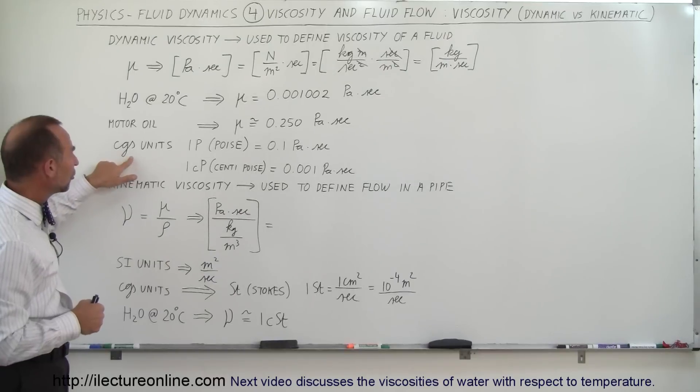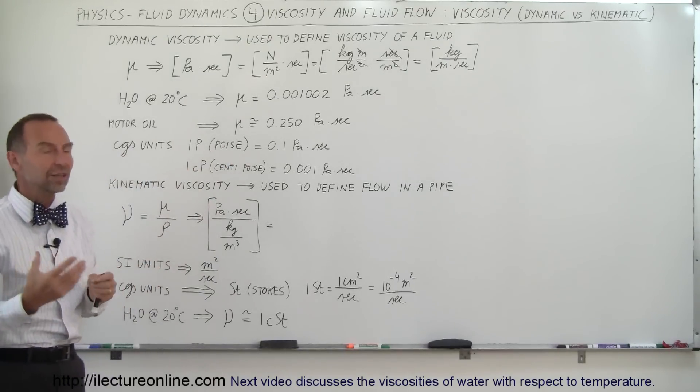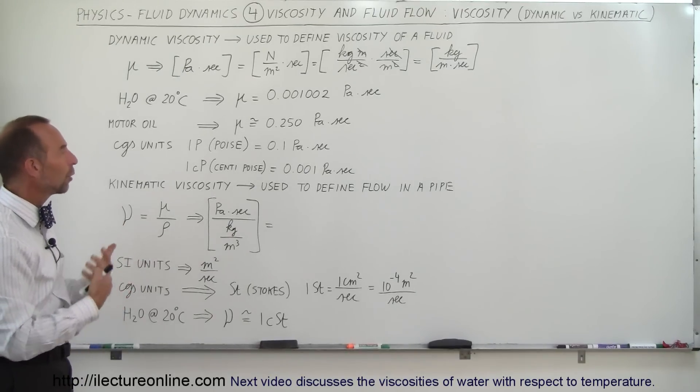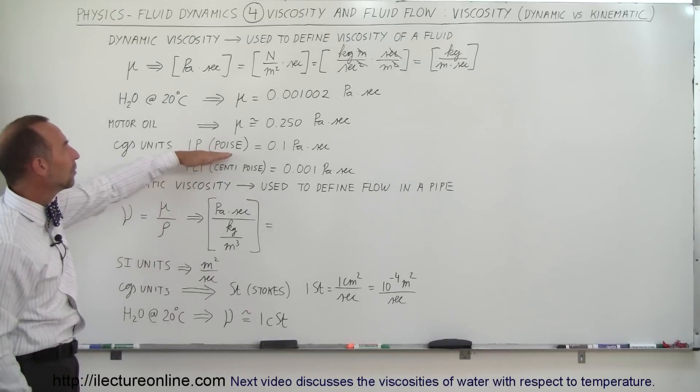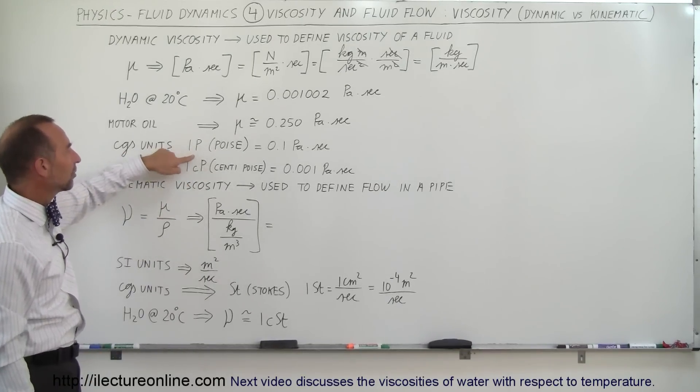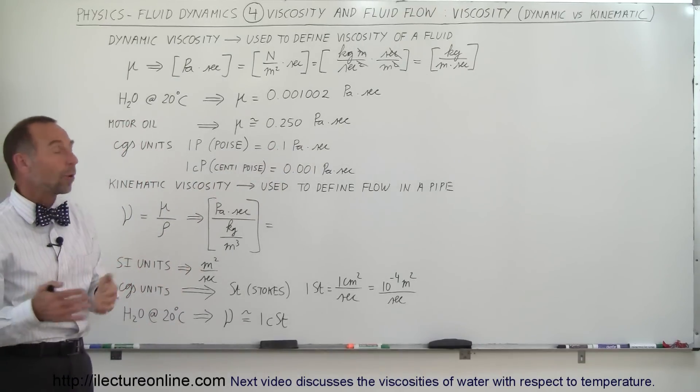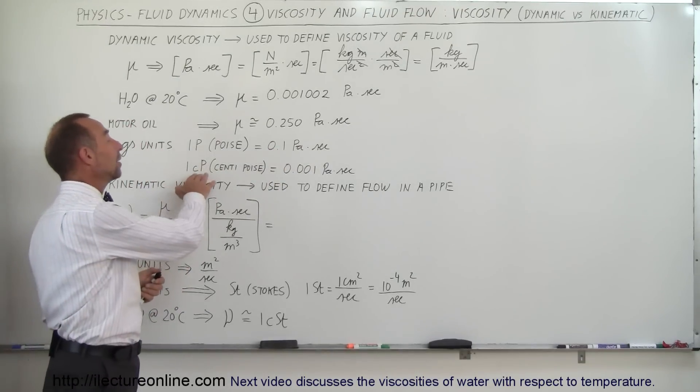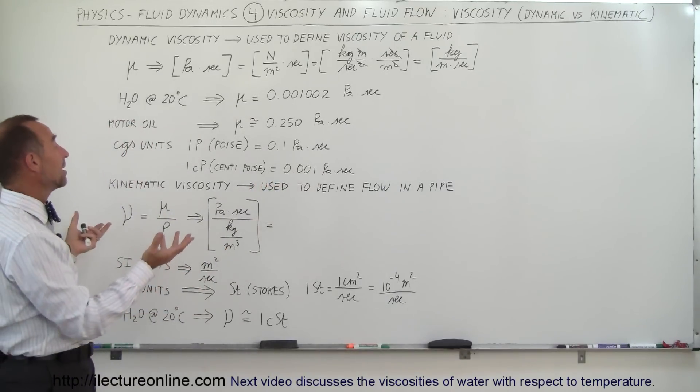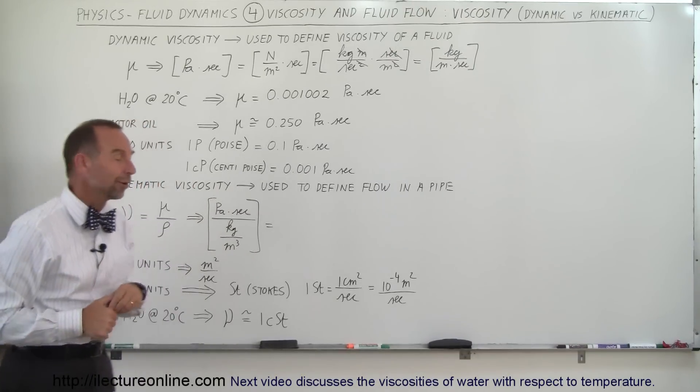In CGS units, we also can say that the units are in poise. That comes from Poiseuille. That was the physicist that also dealt a lot with fluid flow and viscosity and so forth. So we named the unit of viscosity after Poiseuille. And so 1 poise is 0.1 pascal times seconds, and centipoise is used quite a bit. Notice that 1 centipoise then would be 0.001 pascal times seconds, which means that the viscosity of water is roughly 1 centipoise.